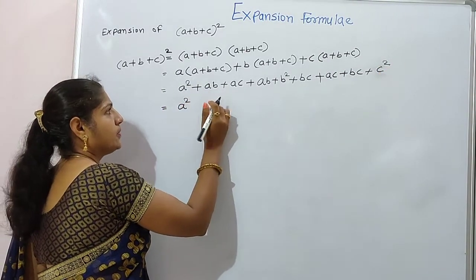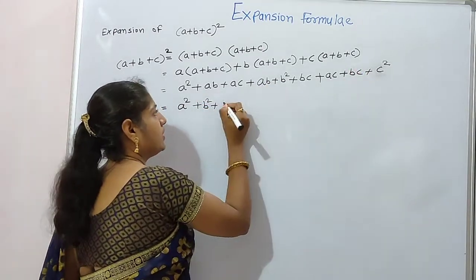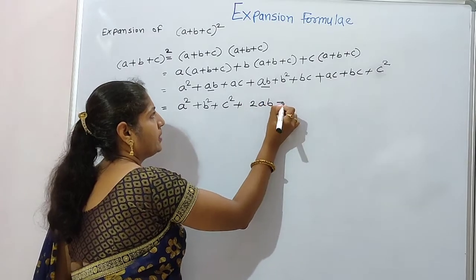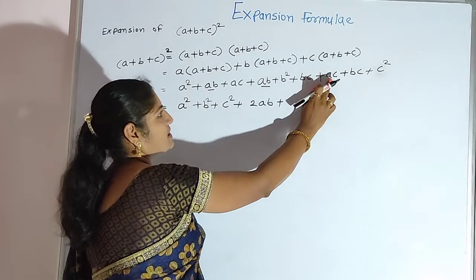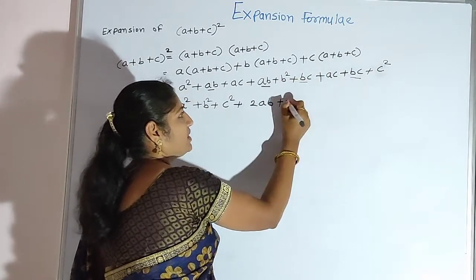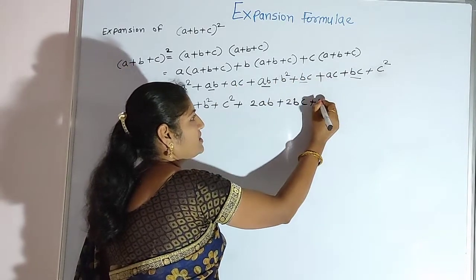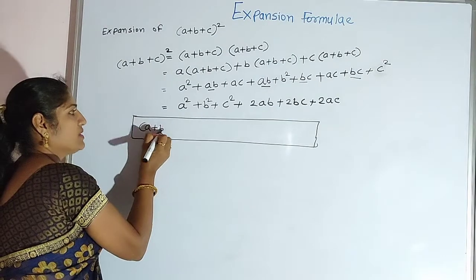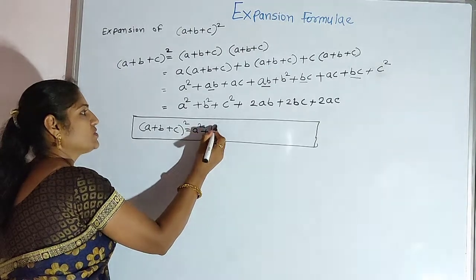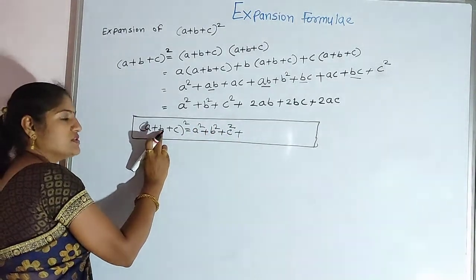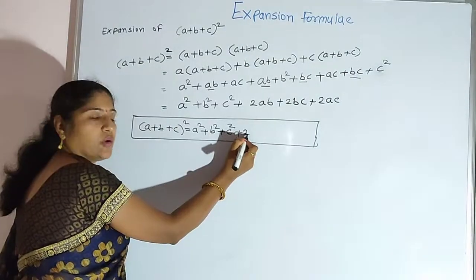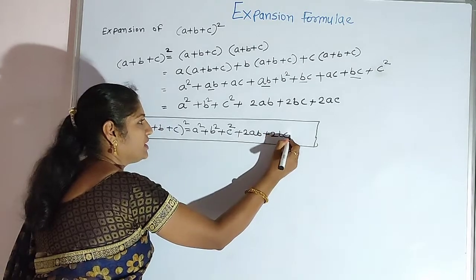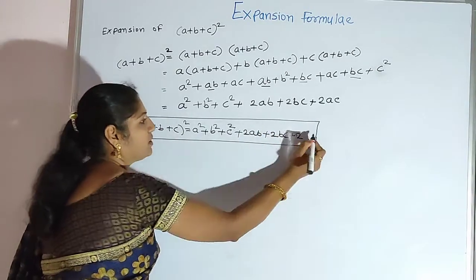We collect like terms: a square plus b square plus c square. Then ab plus ab gives 2ab, bc plus bc gives 2bc, and ac plus ac gives 2ac. So the formula becomes: a plus b plus c bracket square equals a square plus b square plus c square plus 2ab plus 2bc plus 2ac.